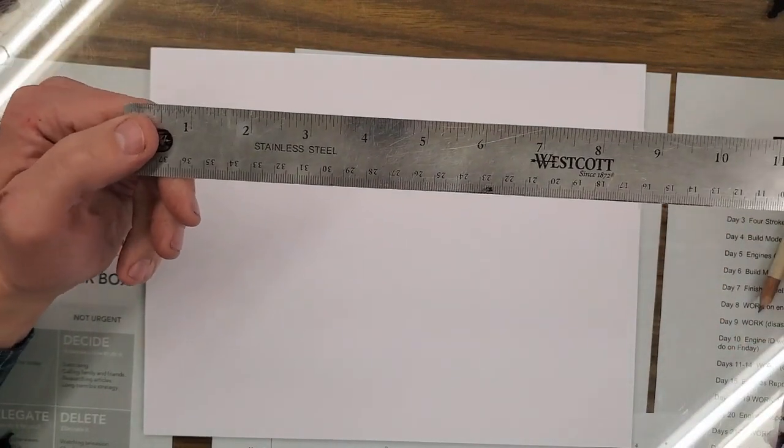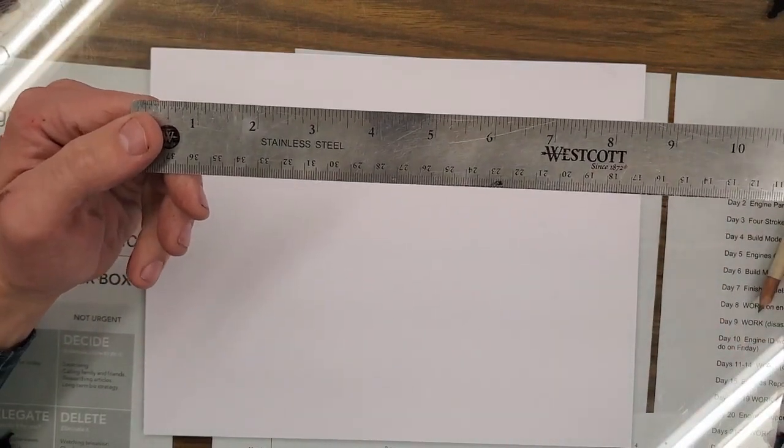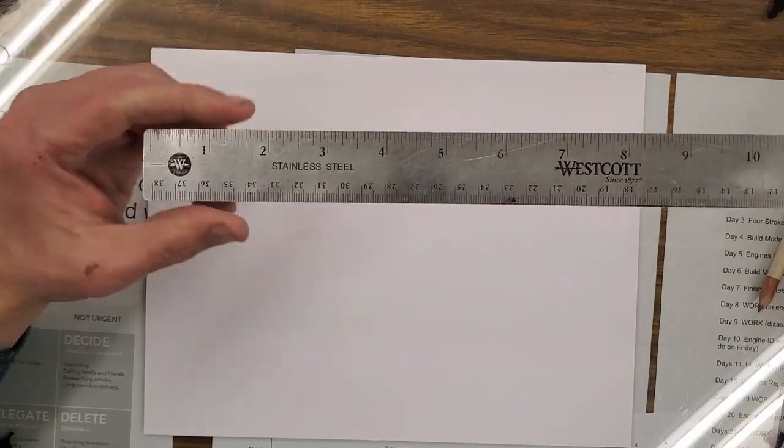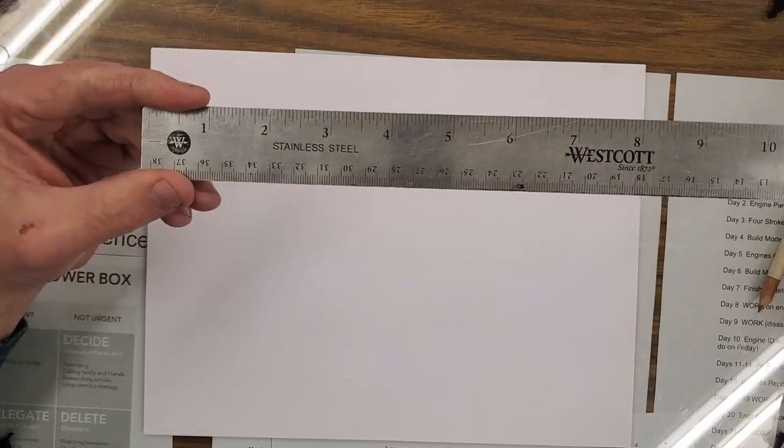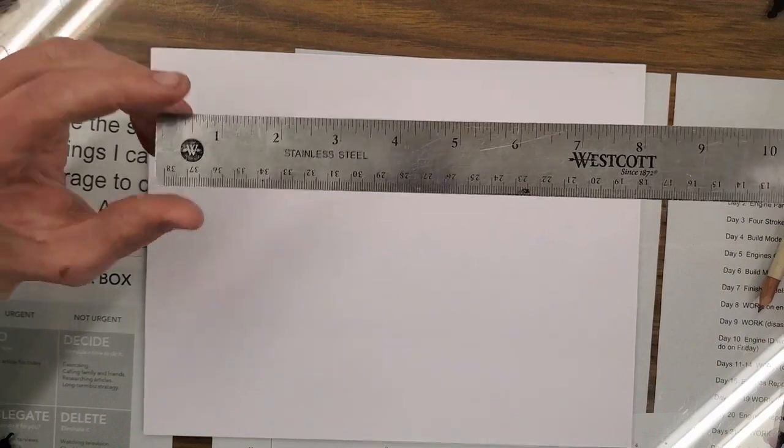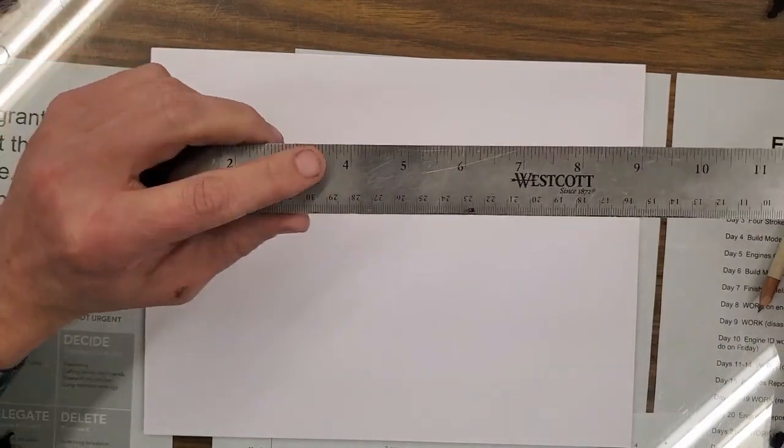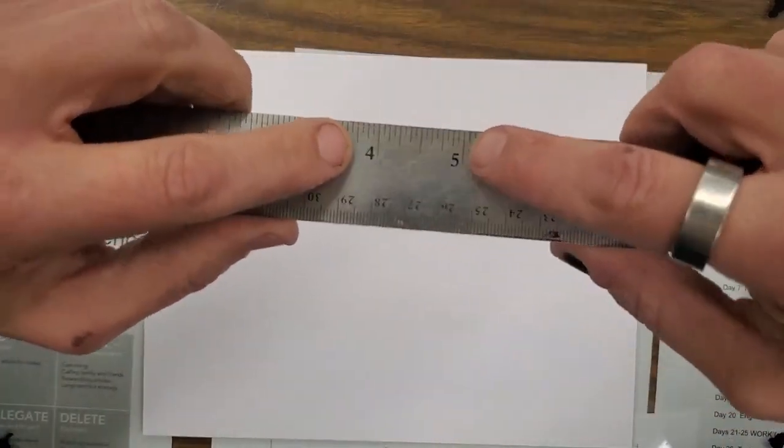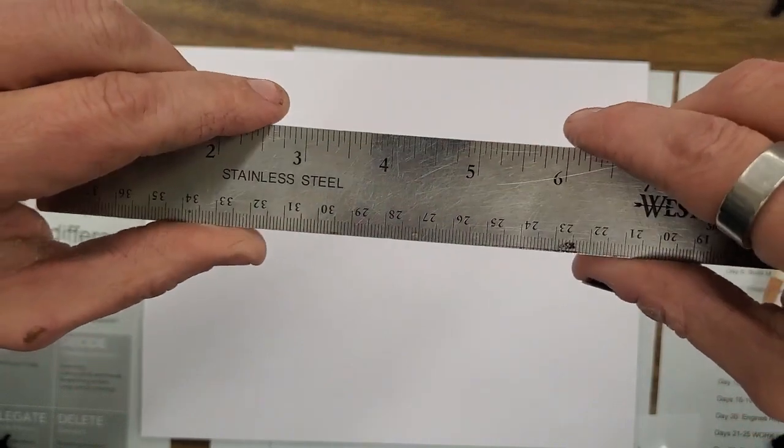This side of the ruler though, we need to know how to use fractions. And it can be a little confusing for anyone that's just starting to try and learn all of these measurements. So I've got a little life hack that can make reading a ruler quite a bit simpler.